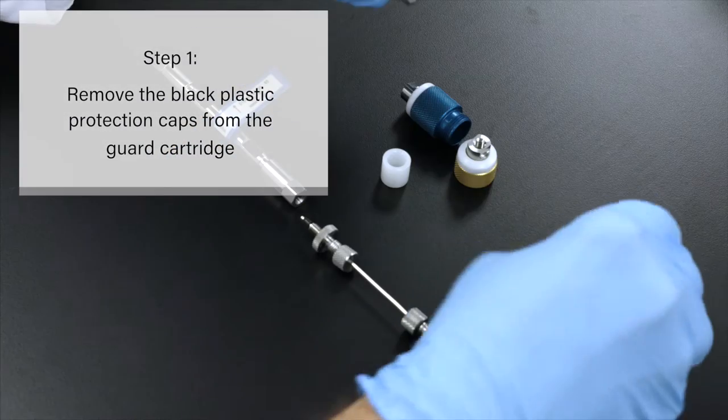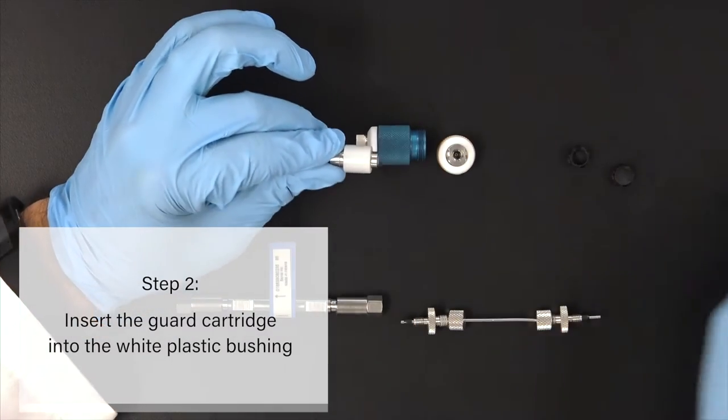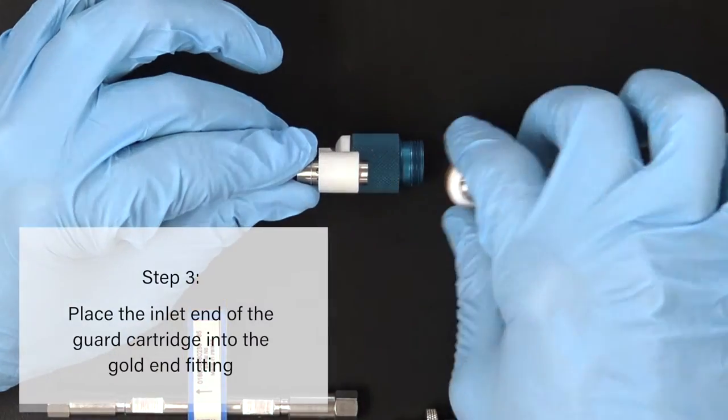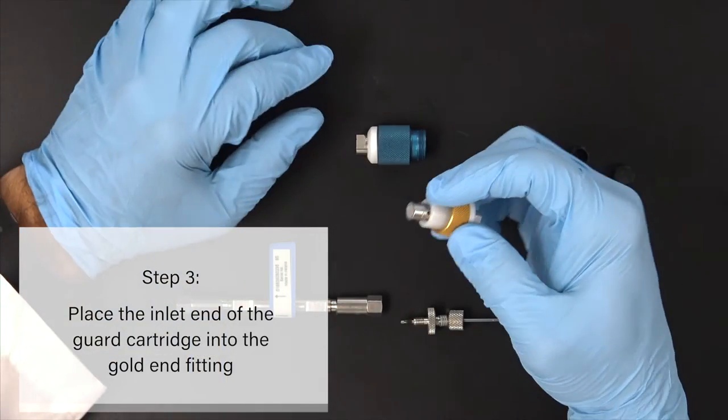Remove the black plastic protection caps from the guard cartridge. Insert the guard cartridge into the white plastic bushing. Place the inlet end of the guard cartridge into the gold end fitting of the Sentry Guard Cartridge Holder.